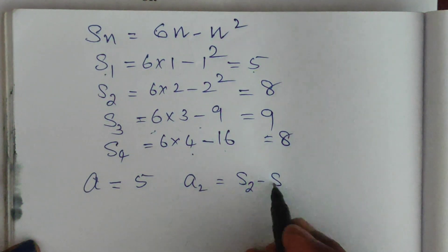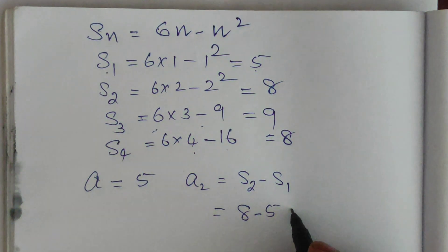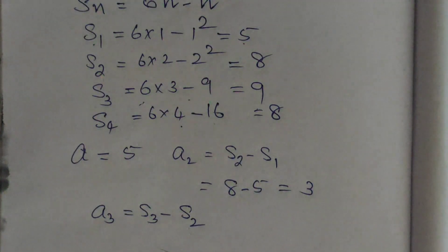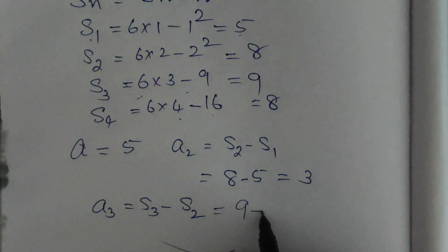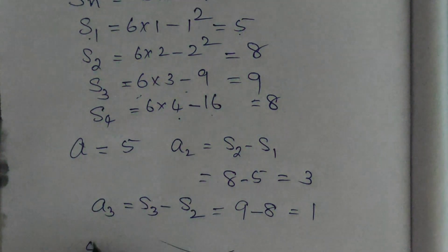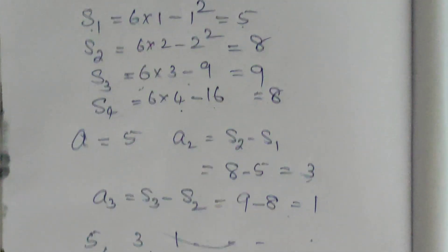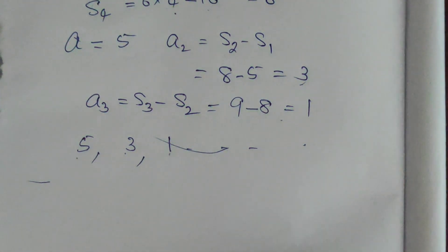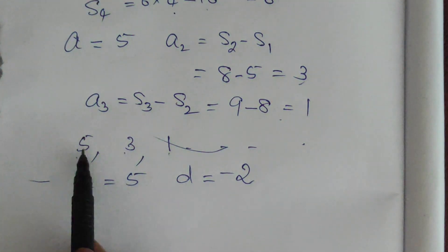The first term a1 = S1 = 5. The second term a2 = S2 - S1 = 8 - 5 = 3. The third term a3 = S3 - S2 = 9 - 8 = 1. So d = a2 - a1 = 3 - 5 = -2, confirmed by a3 - a2 = 1 - 3 = -2.